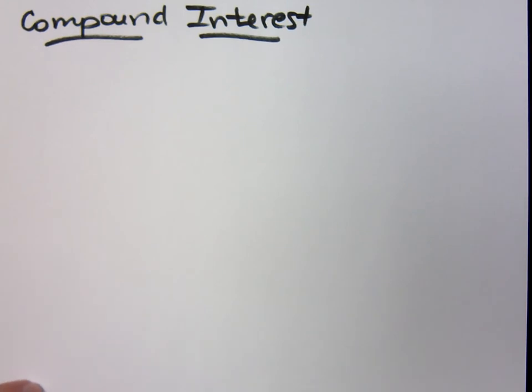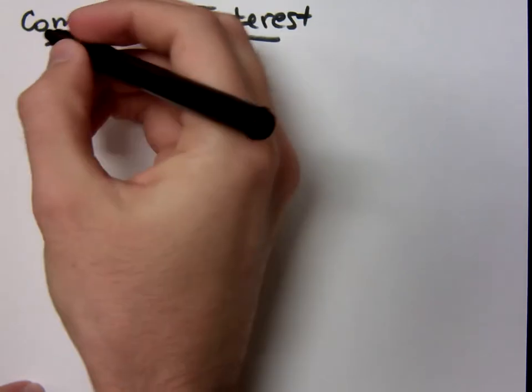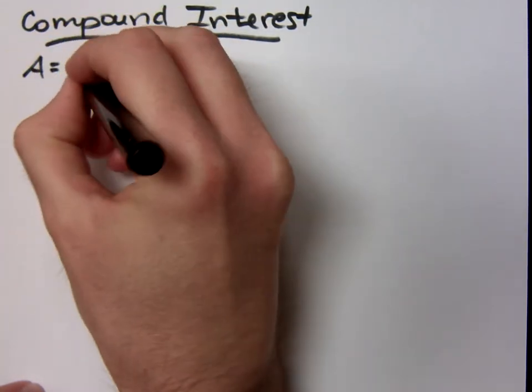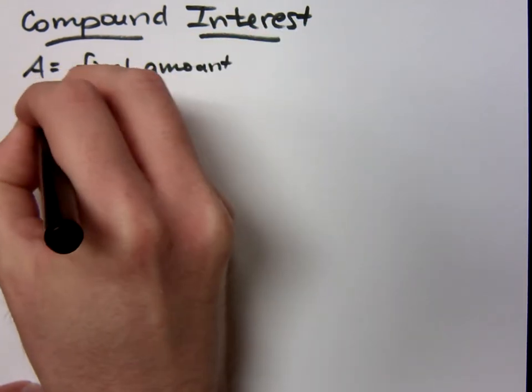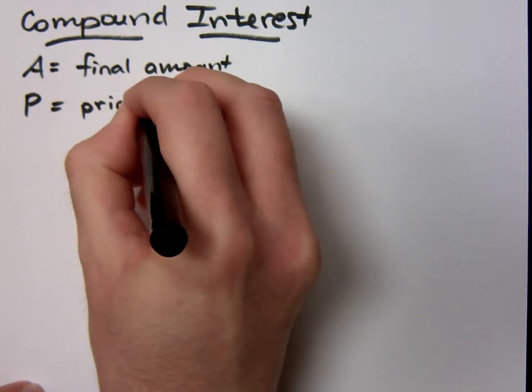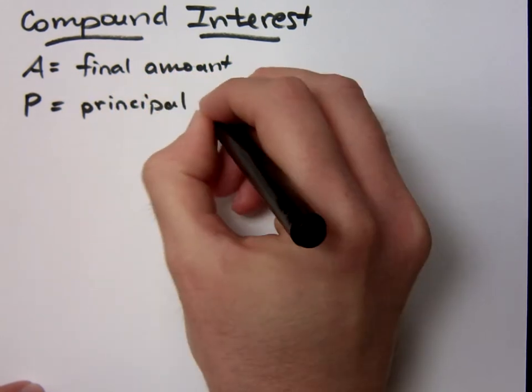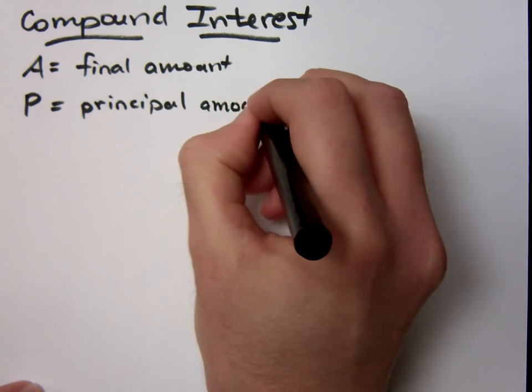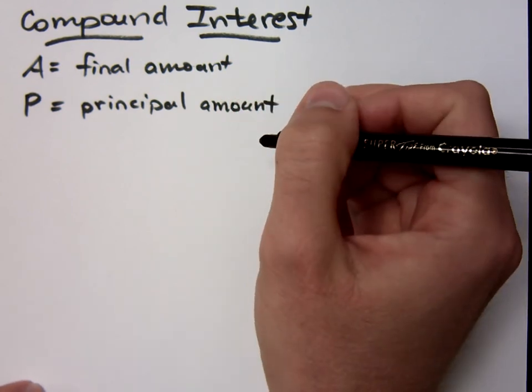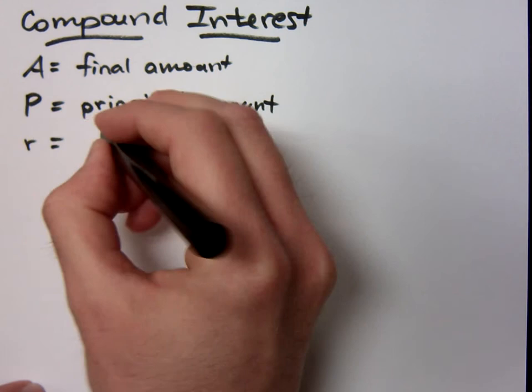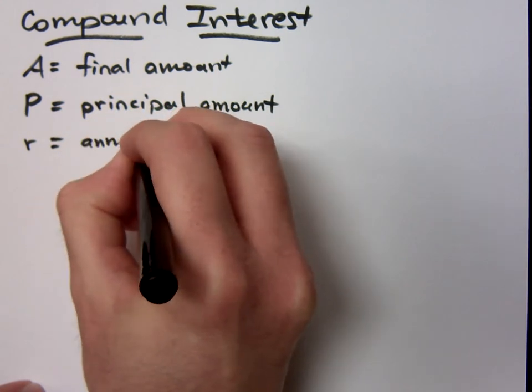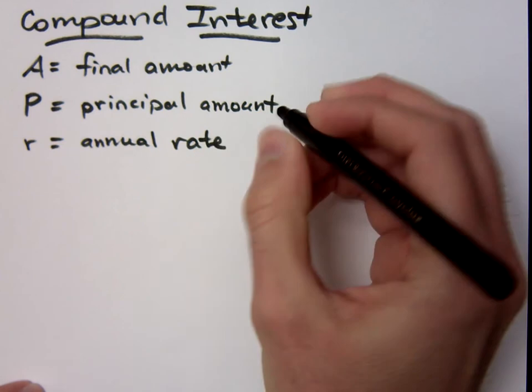So if you know just a few things about the savings account that's earning interest, there's a nice formula for figuring out how much money you're going to have. A is going to be the final amount. We use the letter P to represent the principal amount. That's what you start with. We're going to use a little r to represent your annual rate.